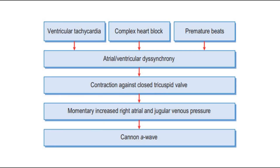This is a flow chart showing the mechanism of Canon A wave. The causes can be ventricular tachycardia, complete heart block, premature beats, and so on. These conditions cause atrial or ventricular dyssynchrony, which momentarily increases the right atrial and jugular venous pressure, thus forming the Canon A wave.